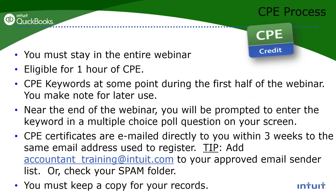For CPE credit — for those of you who are certified public accountants or certified bookkeepers — you have to stay on this webinar for the entire session; watching the recording does not qualify. You can get one hour of CPE. During the first half I'll give you a CPE keyword — write it down — because towards the end I'll give you a poll question where you enter that keyword. You'll get your CPE certificate emailed to you in about three weeks, so put a reminder on your calendar and check your spam folder.